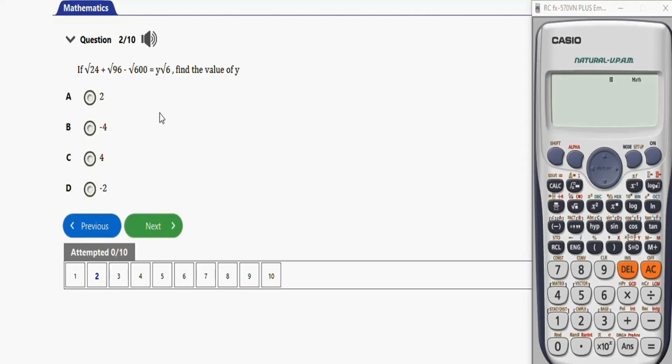Let's get started. The first question I have here, we're going to practice with six repeated questions for this video. The first one says: If √24 + √96 - √600 = y√6, find the value of y.